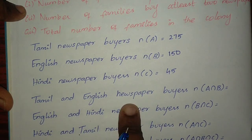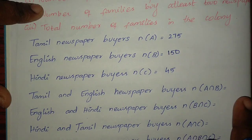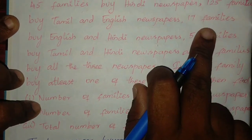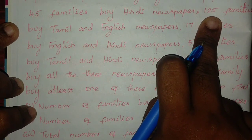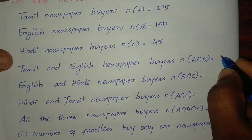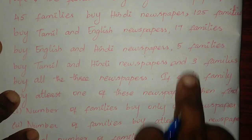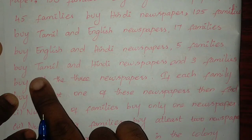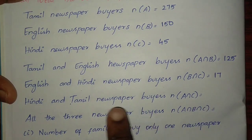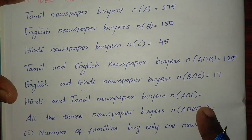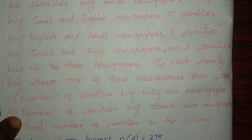Tamil and English: n of A intersection B is 125. English and Hindi: n of B intersection C is 17. Hindi and Tamil: n of A intersection C is 5.